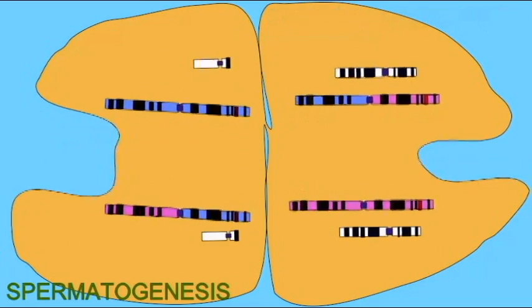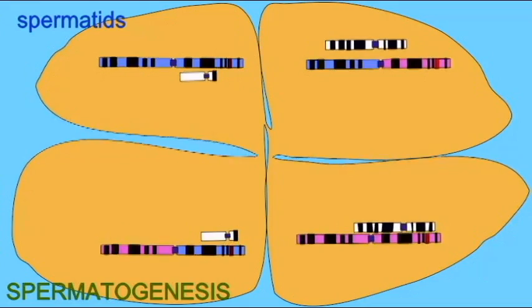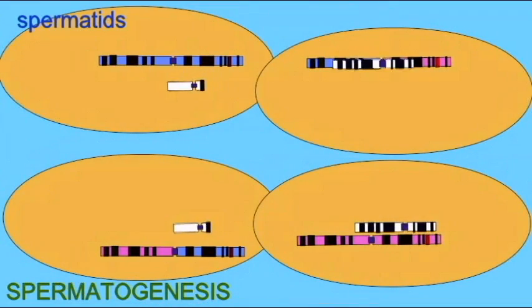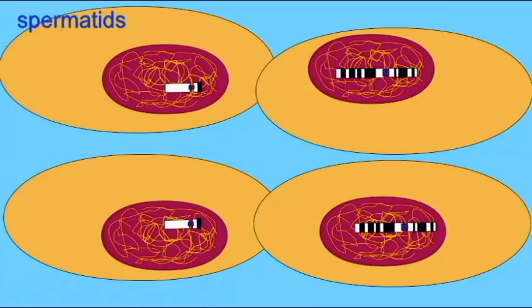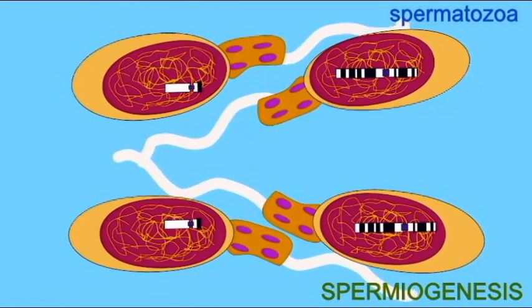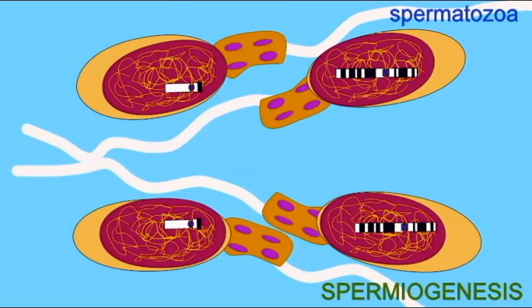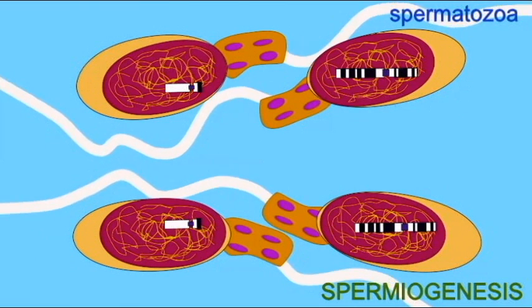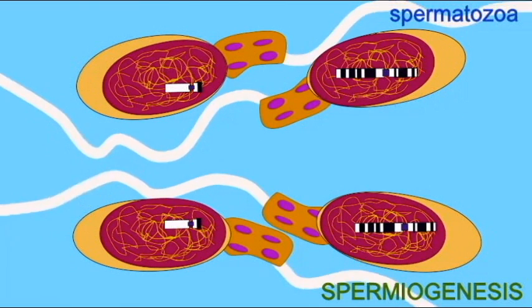Two will possess only an X chromosome and if they fertilize an ovum would produce an XX female zygote, while others will possess a single Y chromosome and if they fertilize an ovum would produce a male XY zygote.